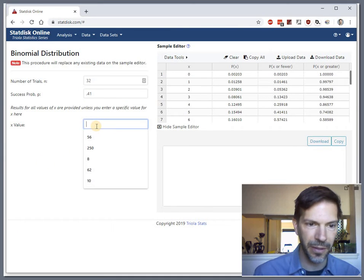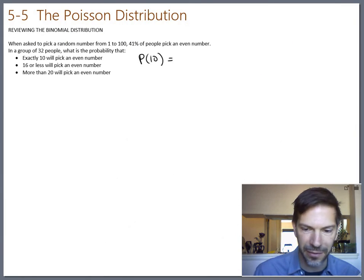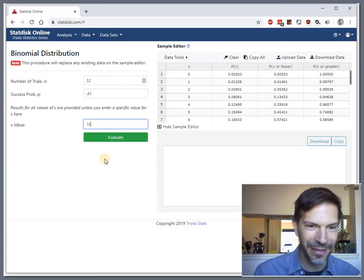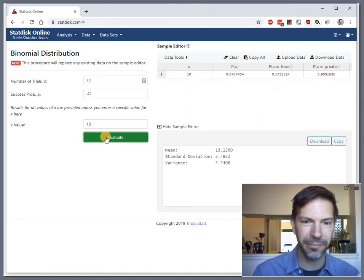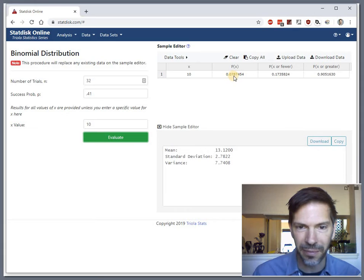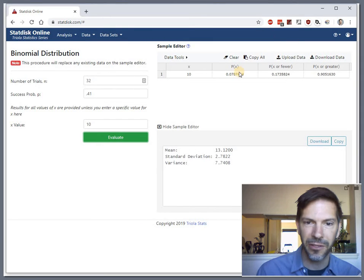I was asking for the probability of getting 10. Let's do the probability of 10 and evaluate. If X is 10, then the probability of X is about 0.0787, rounded to three sig figs. Keep in mind, StatDisk also gives us the probability not just of 10, but also of 10 or fewer and 10 or more. But right now we just want the probability of 10.